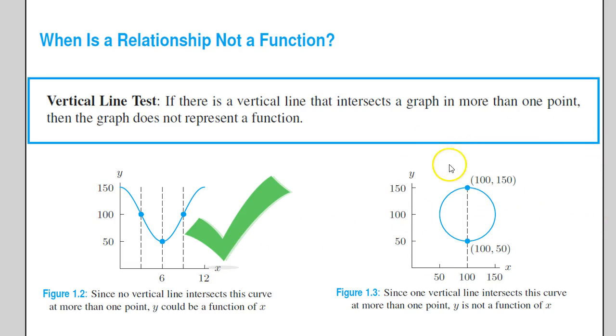But over here, this has a vertical line and actually many more vertical lines that will pass through it and intersect the graph more than once. And that means this is not a function. That's the gist of what we're going to talk about.